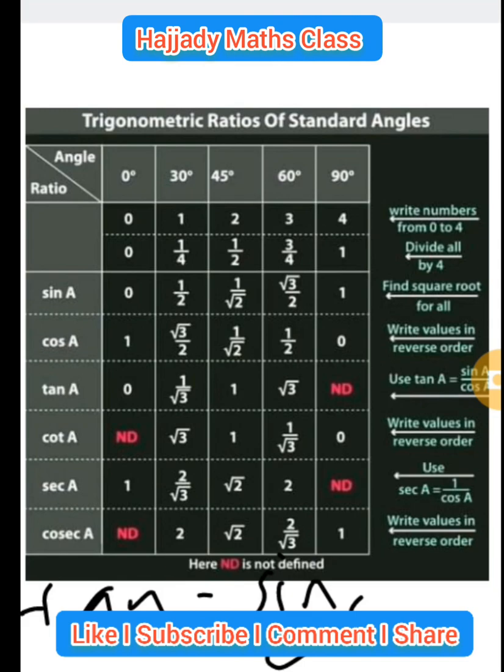So in summary, what we just have to do is to write 0 to 4, divide by 4, and then find the square root for your sin. Write in reverse order for cos and divide sin by cos.